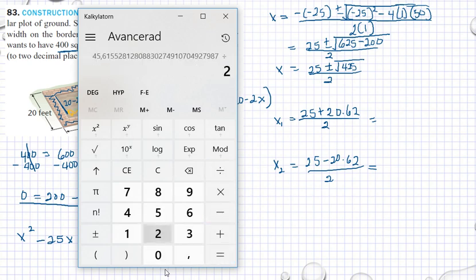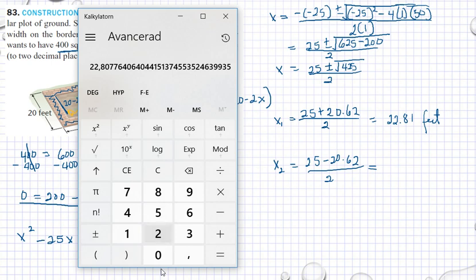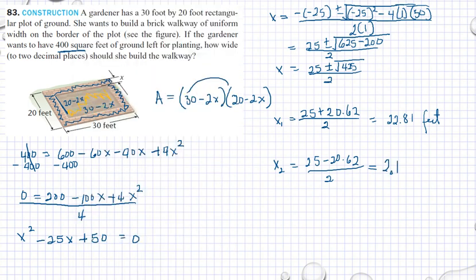So one possibility is 25 plus the square root of 425, which is 20.62, divided by 2. Another possibility is 25 minus 20.62 divided by 2. The first gives us 22.81 feet. The other x is 25 plus the square root of 425 divided by 2, which is 2.19 feet.